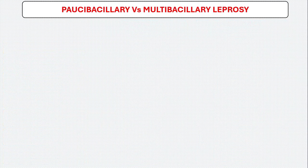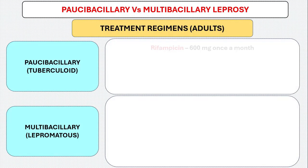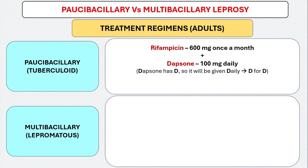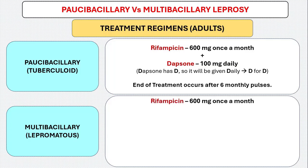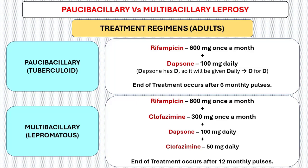Now moving to the different treatment regimens in paucibacillary and multibacillary leprosy. In paucibacillary leprosy, we give Rifampicin 600 mg once a month plus Dapsone 100 mg daily — Dapsone has a 'D', daily has a 'D', so Dapsone is given daily — and the duration of treatment is 6 months. In multibacillary leprosy, we give Rifampicin 600 mg once a month plus Clofazamine 300 mg once a month plus Dapsone 100 mg daily plus Clofazamine 50 mg daily, and the duration of treatment is 12 months.